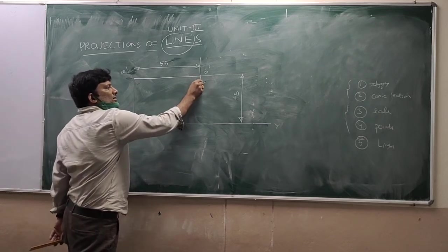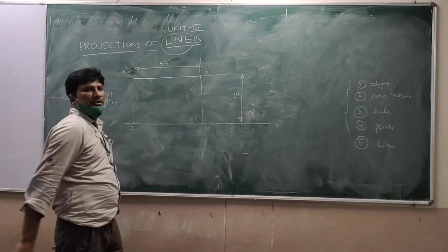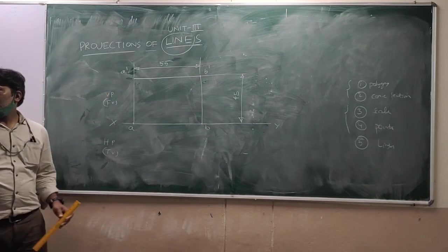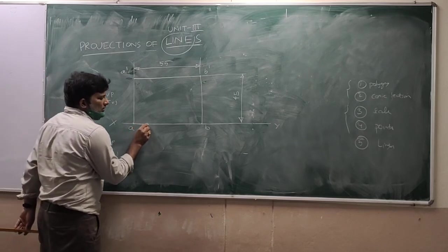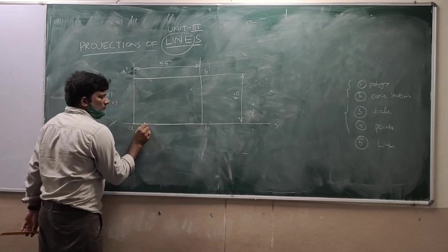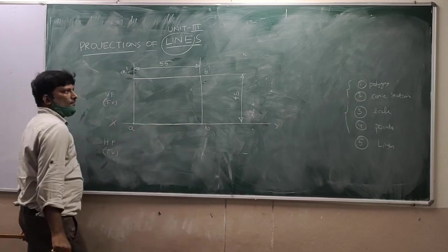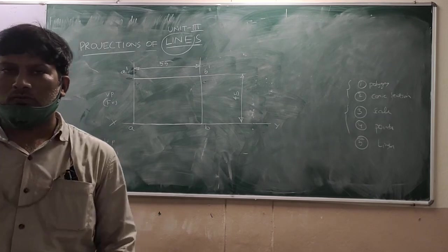Now coming here, another vertical projector line where it will be intersecting, that what you have to call it as B. AB. This is our top view. So if you want, show with the graph line. Use HB pencil. This is our final answer. This is our final answer. Thank you.